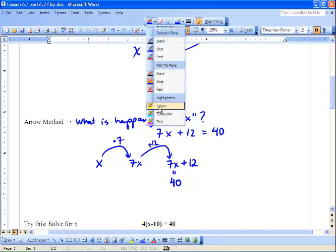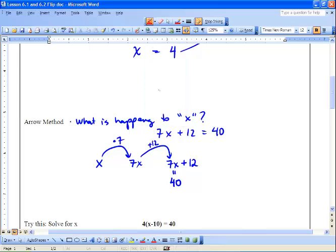We do the exact opposite of what we did when we went to the right. Now we go like this. And we subtracted 12. That's the opposite of 12. And we get 28. Now we do the exact opposite of multiplying by 7. So we divide by 7 and we get 4. And x equals 4. So that's our arrow method.